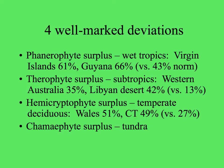The wet tropics show a predominance of phanerophytes — woody plants — more than the normal. In the subtropics, especially dry or seasonal places, there's a therophyte surplus: plants that perennate only in their seed. In the temperate deciduous forest, there are many hemicryptophytes with renewal buds at or slightly under the surface of the ground. And lastly, a chamaephyte surplus is found in the tundra.